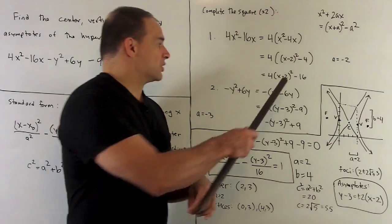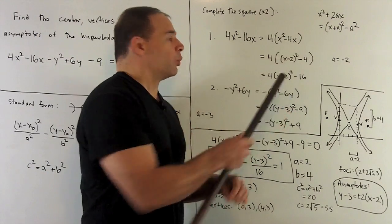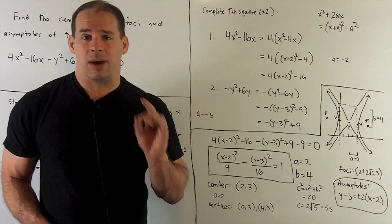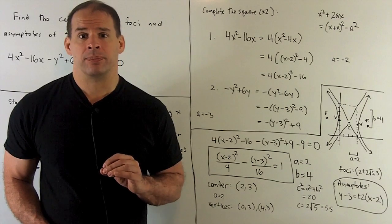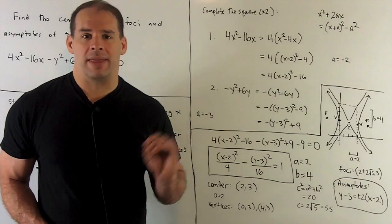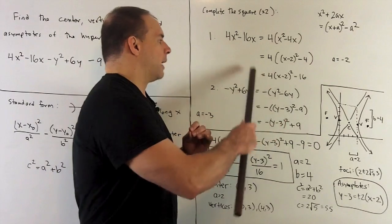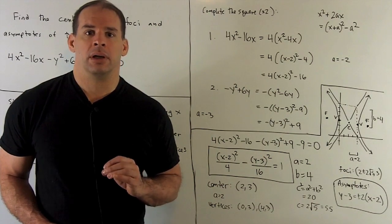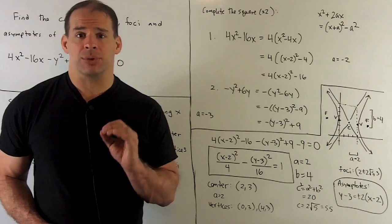Note, this is always going to be a minus sign. Whatever I put in for a gets squared, so it becomes positive. And then we hit it with a minus. Push the 4 through, and that's going to give me my x terms rewritten in a more useful form. Next, we go to the y terms.